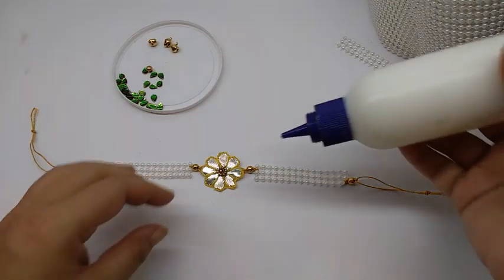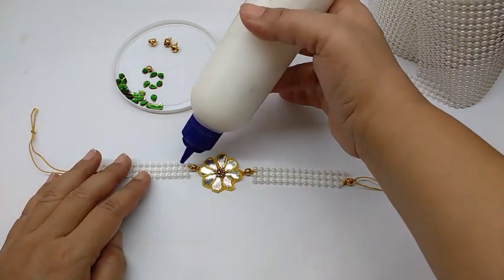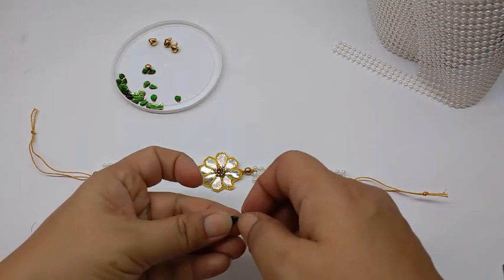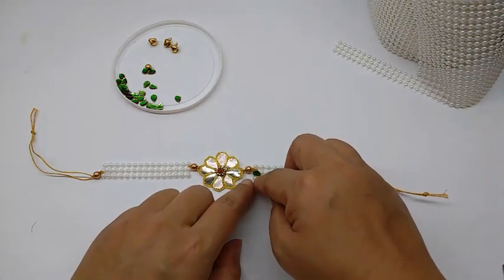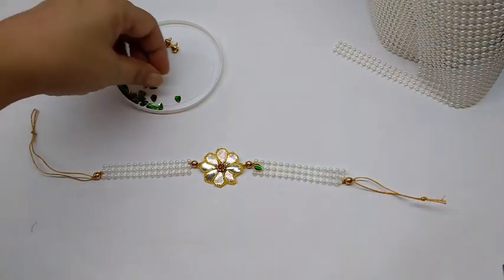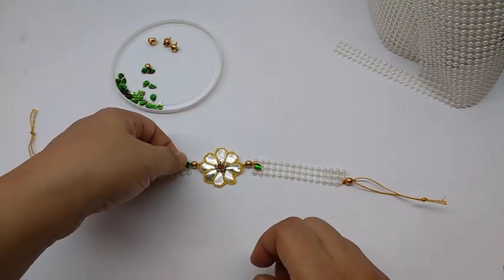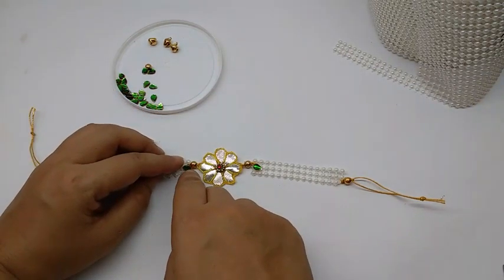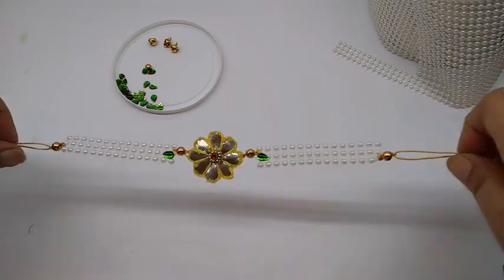Now just apply glue on the center bead on both sides and stick these studs on it. And this is how the rakhi would look.